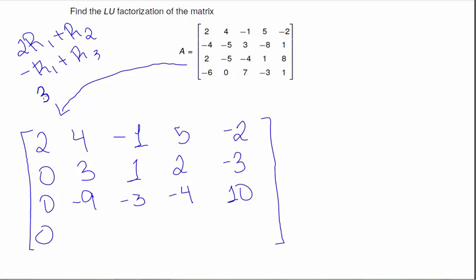For the last one, I'll do 3 row 1 plus row 4. 6 minus 6 is 0. 12 plus 0 is 12. Minus 3 plus 7 is 4. 15 minus 3 is 12. And then negative 6 plus 1 is negative 5.